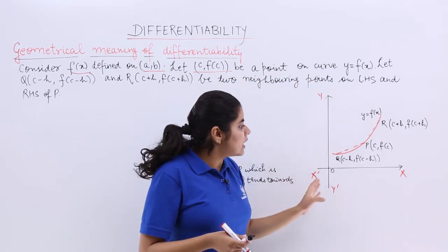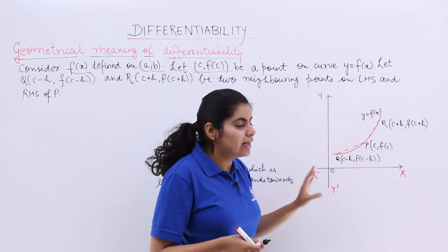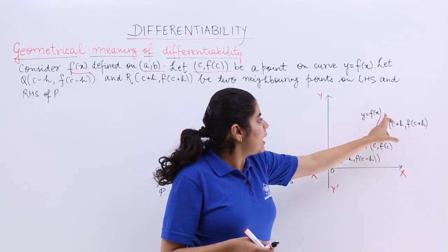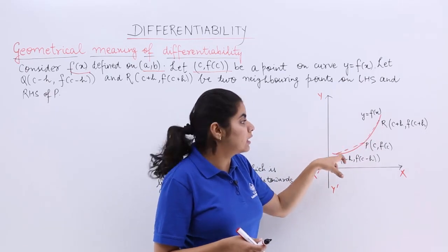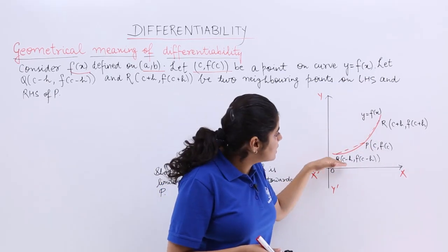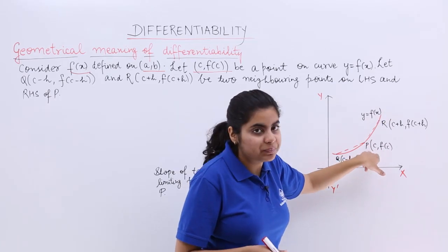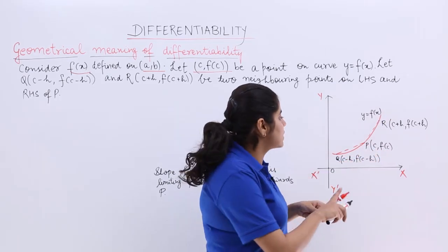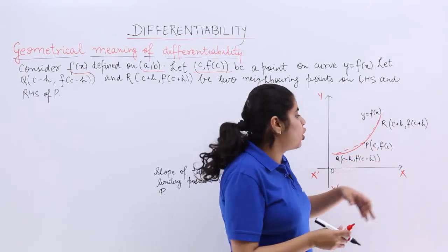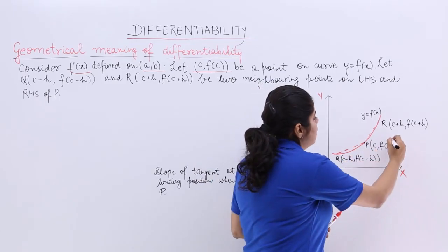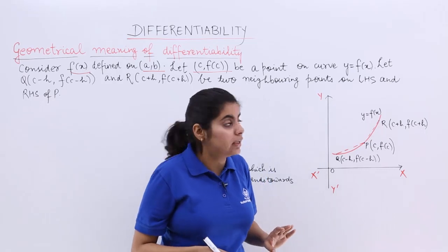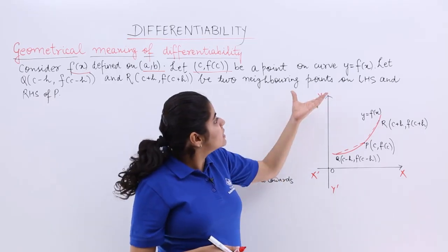Now you have the Cartesian plane x'x y'y given to you. This red curve is y = f(x). You can see there is a point P on this curve. This point is P and it is (c, f(c)) — c is the x-coordinate, f(c) is the y-coordinate.